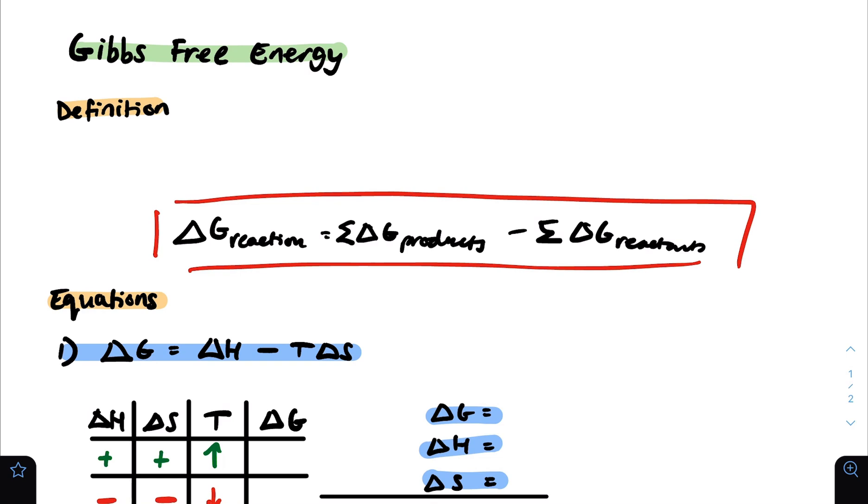Gibbs free energy has a pretty technical definition. It's basically the thermodynamic potential that can be used to calculate the maximum amount of work that must be performed within a closed system. This sounds complicated, but don't worry, you don't need to memorize the definition. What you do need to know though is what the values of Gibbs free energy represent.